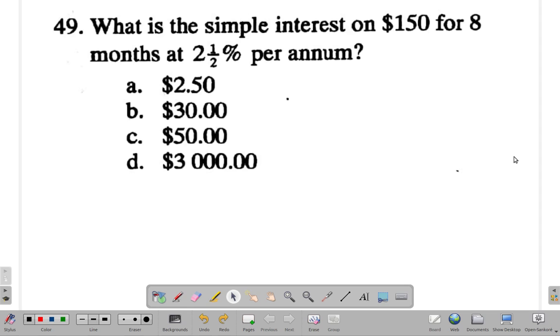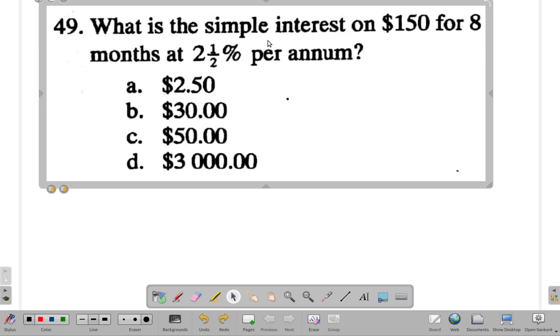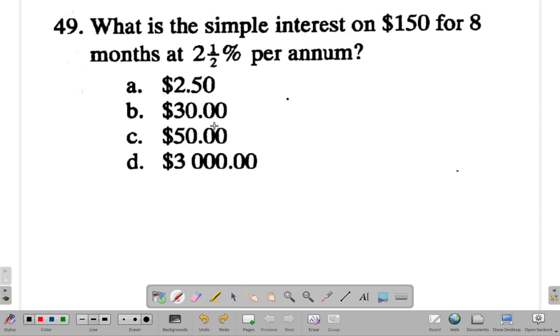Alright, you answered it. What did you get? Let's see. What is the simple interest on $150 for 8 months at 2½% per annum? First of all, see what you can eliminate.